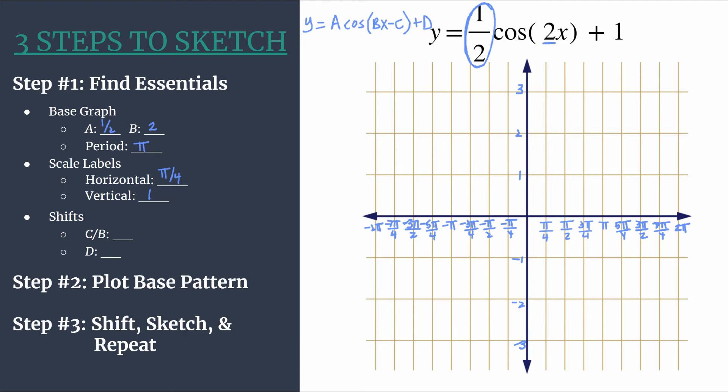The last part of step one - remember step one is really the meat of it. You do all your analysis and planning in step one and then everything else will fall into place. Our final part is to identify our shifts. Looking back at our general form equation, we do not have anything, it's just 2x. So we actually do not have a phase shift. C over B, well C is 0. But we do have D equal to a positive one. This means you're going to move your base pattern up one. We'll do that in step three.